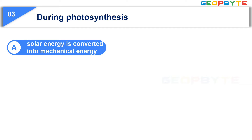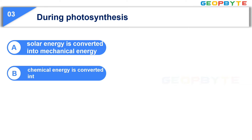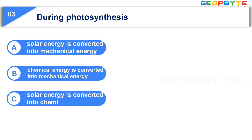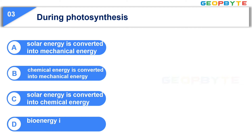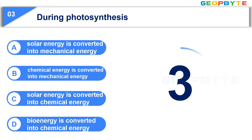Moving to the next question: During photosynthesis — Option A: Solar Energy is converted into Mechanical Energy. Option B: Chemical Energy is converted into Mechanical Energy. Option C: Solar Energy is converted into Chemical Energy. Option D: Bio Energy is converted into Chemical Energy. Your time starts now. Your time is up and the correct answer is Option C.